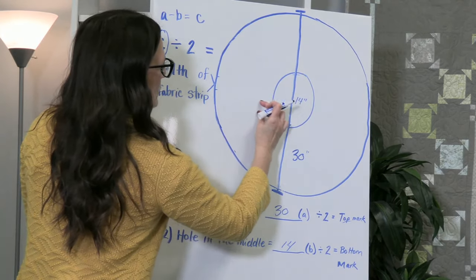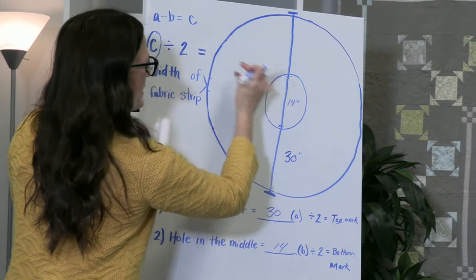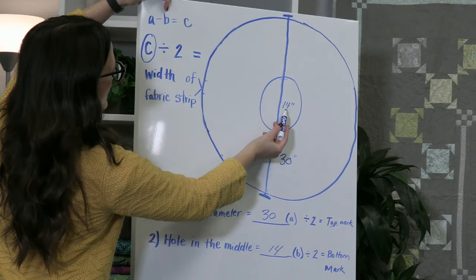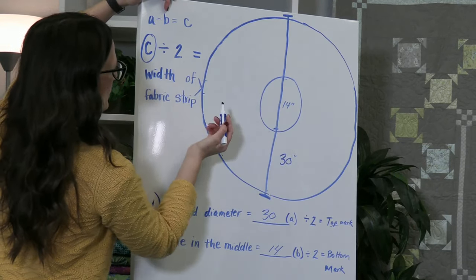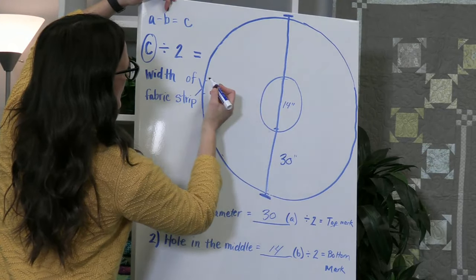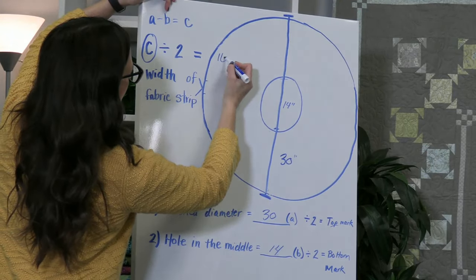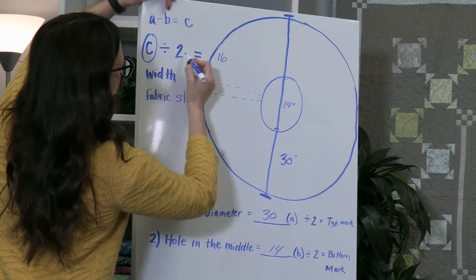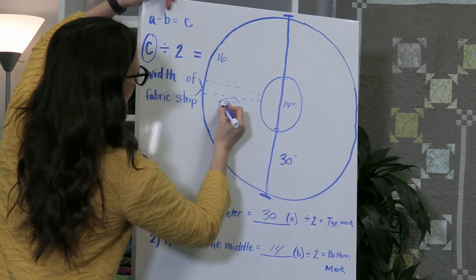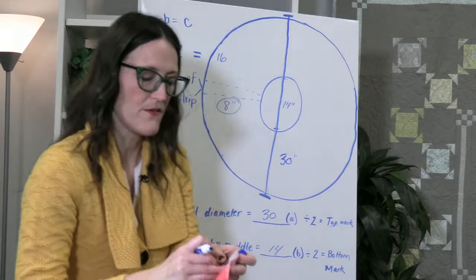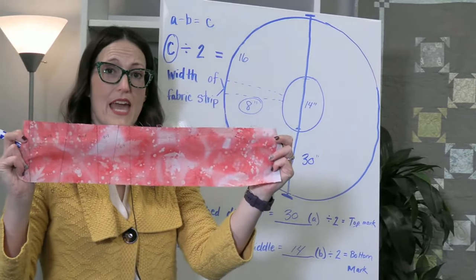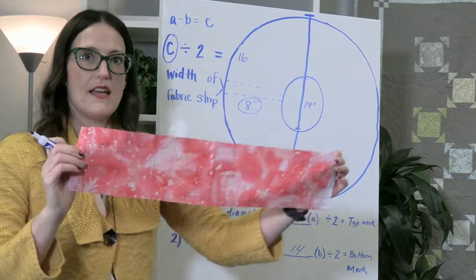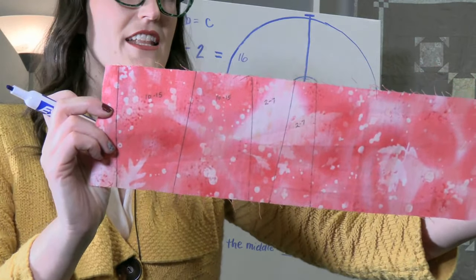So in order to find how wide of a strip you need to start cutting those little wedges from you need to take A minus B which equals C divided by 2. So 30 minus 14 equals 16, I guess I'll put 16 right here. So if you were to cut your little wedge like this, divided by 2 equals 8. So your width of your fabric that you need to start cutting your wedges from needs to be 8 inches wide this way.